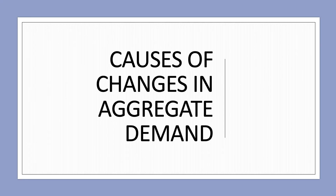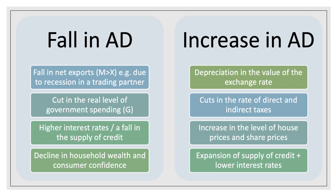So what factors might bring about an increase or a decrease in aggregate demand? A fall in demand, which might prompt fears of recession, could be caused by a contraction in the value of net exports — perhaps imports exceed exports and we have a big trade deficit, possibly due to a recession in a trading partner. Aggregate demand might also fall because of fiscal austerity when the government cuts the real level of spending on public services, or because the central bank raises interest rates, or due to a fall in the supply of credit from the financial system. A fall in aggregate demand could also be caused by a drop in household wealth and in overall consumer confidence, or animal spirits.